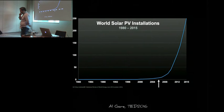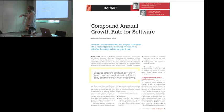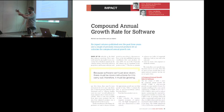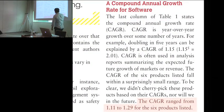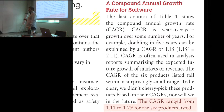So what does this have to do with software? I recently stumbled across a paper called 'Compound Annual Growth Rate for Software.' For those unfamiliar, compound annual growth rate is basically how something grows year over year. The paper looked at some systems and found that the compound annual growth rate for software ranged somewhere between eleven and twenty-nine percent growth per year. To put it in perspective, fifteen percent growth per year means doubling size every five years — that's exponential growth of source code size.